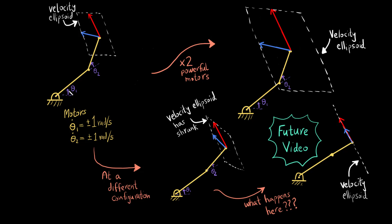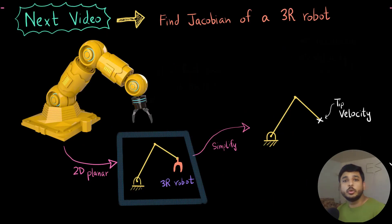In the meanwhile, think about what would happen to the velocities when the ellipsoid shrinks to a single line. Would the robot be able to achieve a velocity in a direction perpendicular to that line, or only along it? Think it over before the next video.